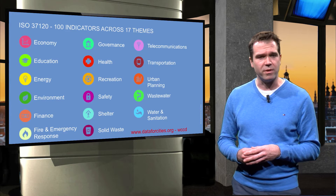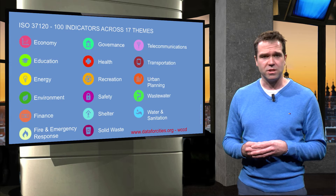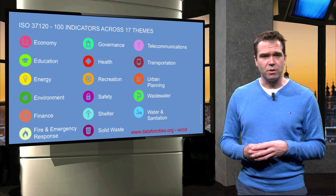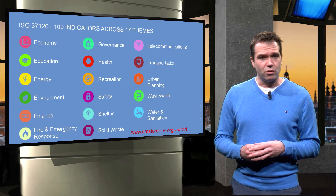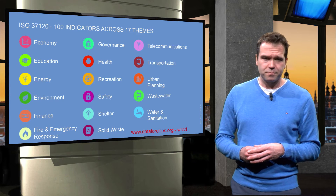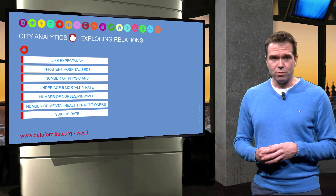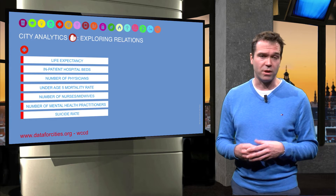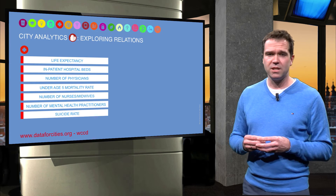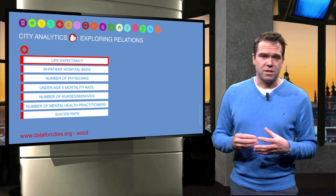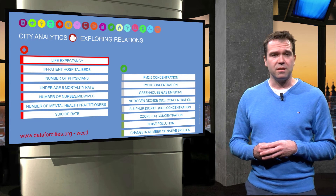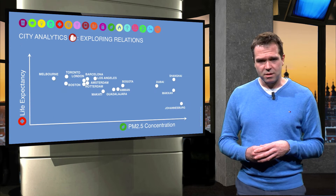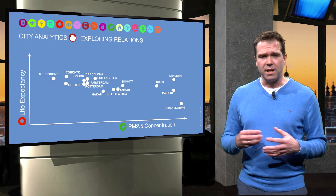ISO 37120 provides a framework for more effective city governance and facilitates learning across cities globally and locally. The 100 indicators across the 17 themes range from economy to social and environmental indicators. This data can also be used for city analytics, exploring relations between data. Cities can be compared for one indicator or multiple ones — for instance, the indicator of life expectancy in the theme of health, and the indicator PM 2.5 for air quality. The data helps to clear up misunderstandings about which cities have bad air quality or not.